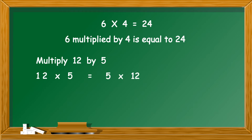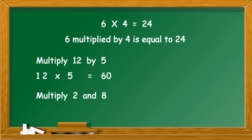Do you know the product? 5 twelves are 60, so 12 into 5 is equal to 60. Another example: multiply 2 and 8. The question says 2 and 8, but the solution is the same — you multiply 2 into 8, which is equal to 16.